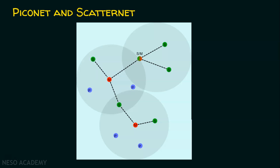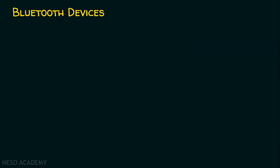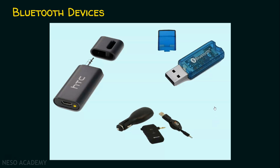Let's now see Bluetooth devices or adapters. There are many adapters that differ in size and functionality. Bluetooth can connect fixed devices and mobile devices. For example, if you have a desktop computer and need Bluetooth connectivity, you can purchase a Bluetooth adapter and plug it into the USB port. So whether it's a fixed or mobile device, Bluetooth can establish short-range communication between them.